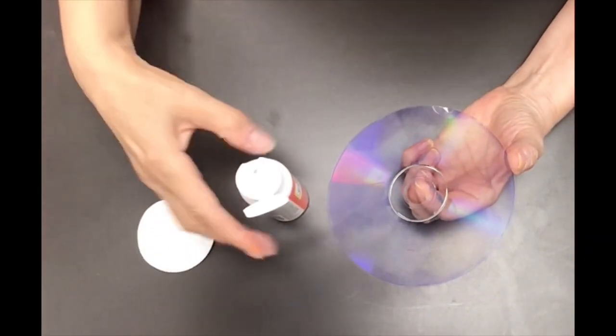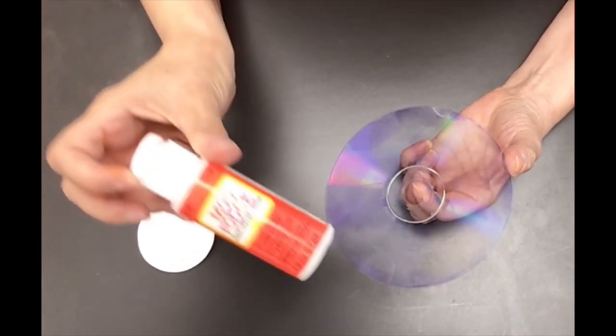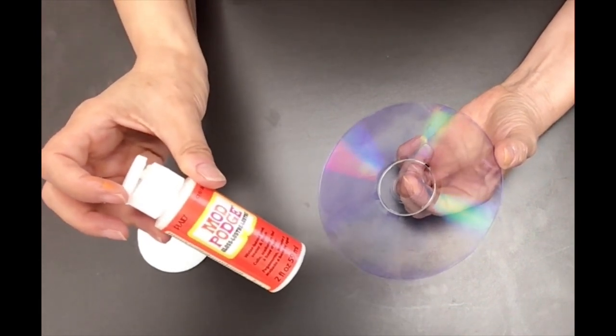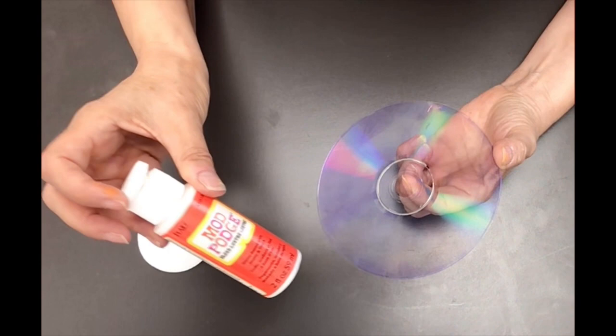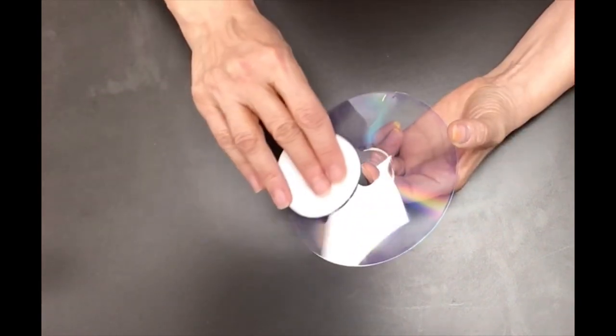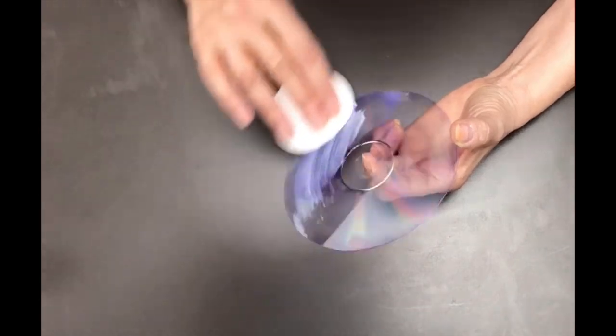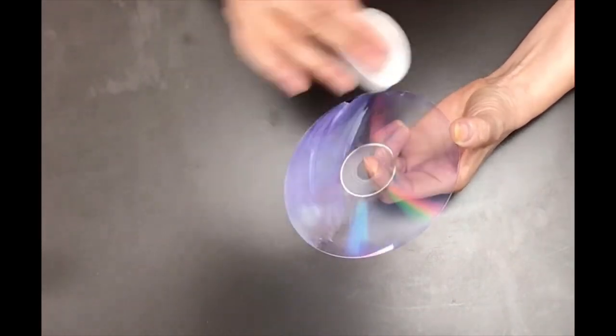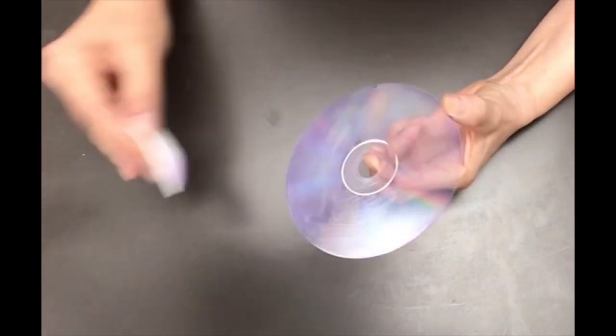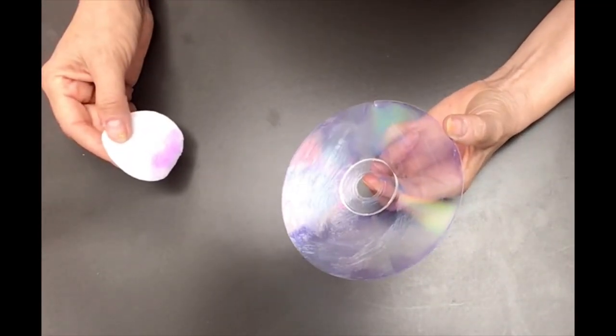The next thing we're going to do is apply a layer of Mod Podge to the side of the disc you're going to be painting. This acts as a primer and gives the paint something to stick to. Now set your disc aside and let it dry.